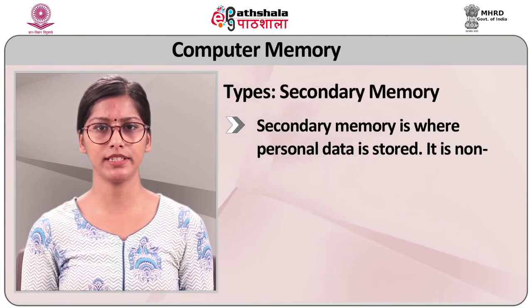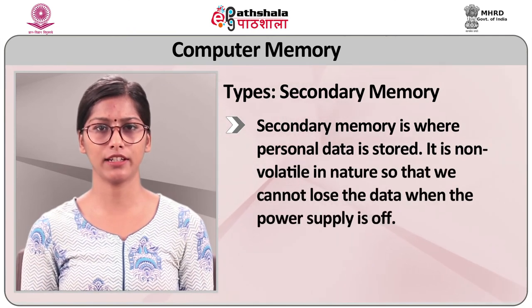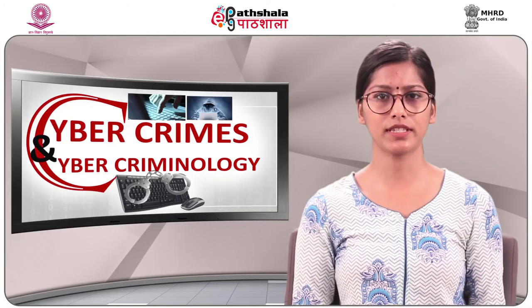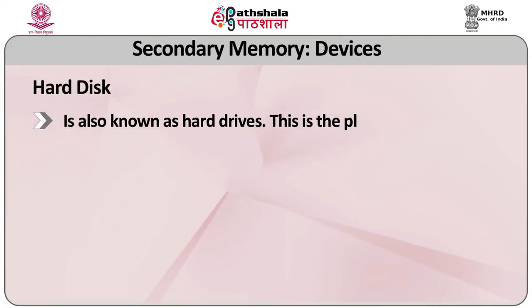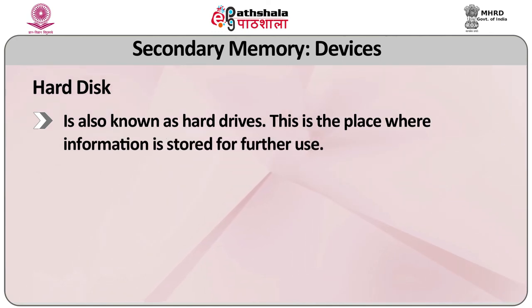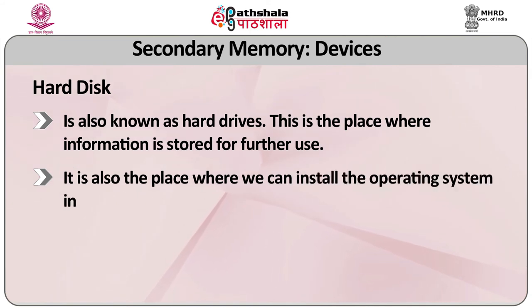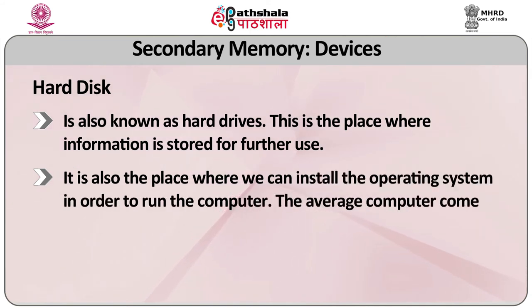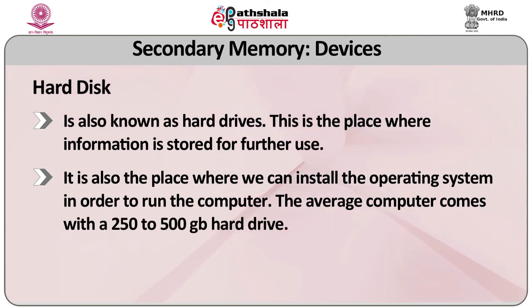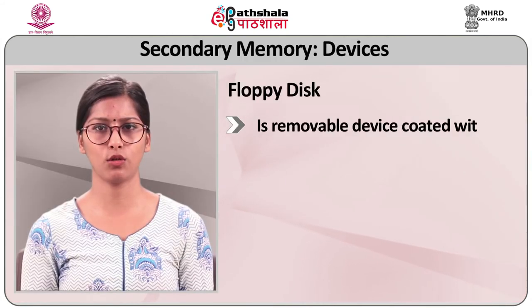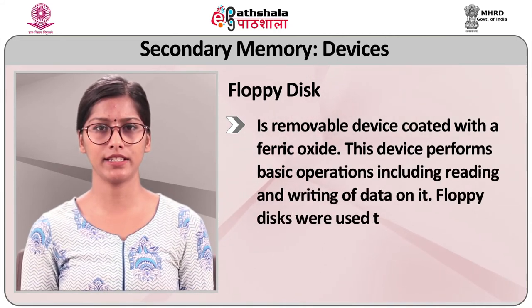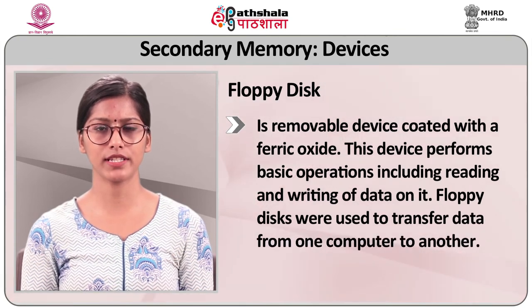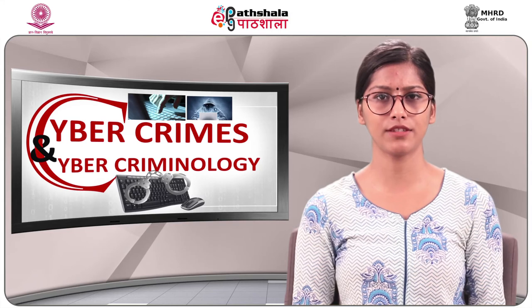Secondary memory is where personal data is stored. It is non-volatile in nature so data is not lost when the power supply is off. Secondary storage devices include: hard disk (also known as hard drives), which is where information is stored for further use and where the operating system is installed. The average computer comes with a 250 to 500 GB hard drive. Floppy disk is a removable device coated with ferric oxide used for reading and writing data, formerly used to transfer data between computers but now largely obsolete due to low storage capacity.